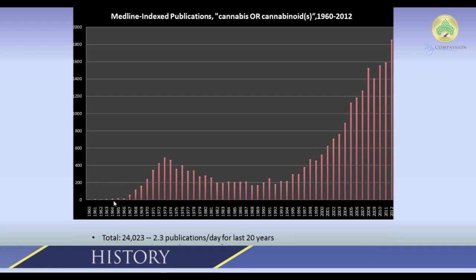In 1964, THC was isolated as the active ingredient in cannabis by Rafael Meshulam in Israel. After that, there was a significant resurgence of interest in cannabis science throughout the early 1960s and 1970s. Around this time, the United States government was conducting a major panel study of marijuana use. The Presidential Commission received a lot of funding and produced large publications. The panel recommended the drug was safe enough to not warrant criminal penalties and merited medical investigation — but those recommendations were not implemented.